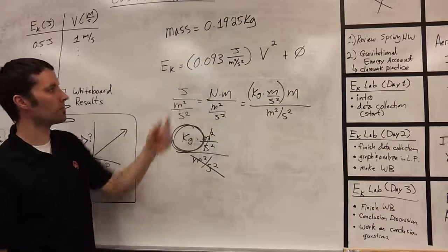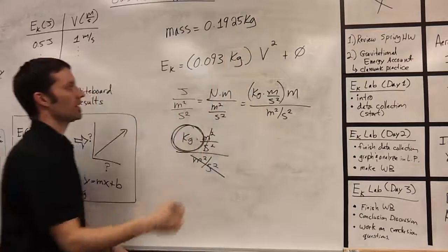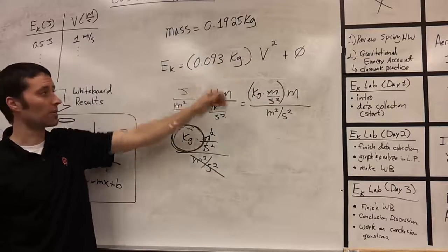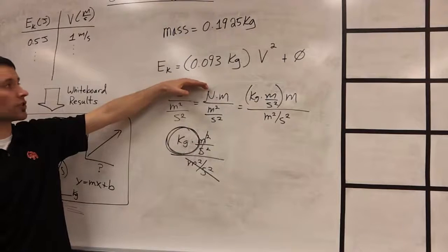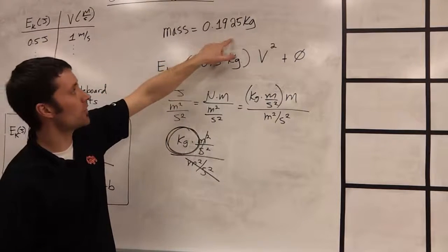So we said that this number must be a mass. So if I replace this with kg, that means that's got to be some mass that stayed constant in our entire experiment. Well, this group ended up having a mass for their car of 0.1925 kilograms.